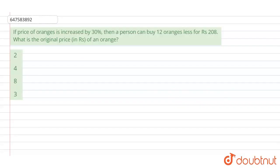Hello, so this is your question. If the price of oranges is increased by 30%, then a person can buy 12 oranges less for rupees 208.